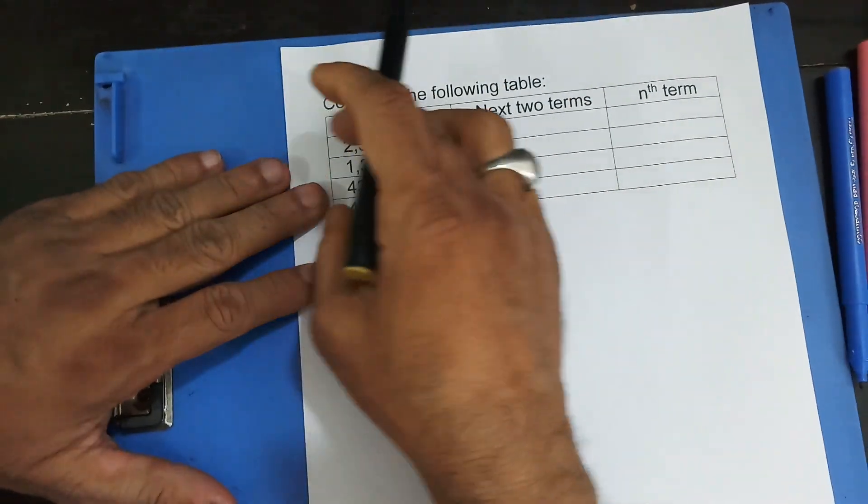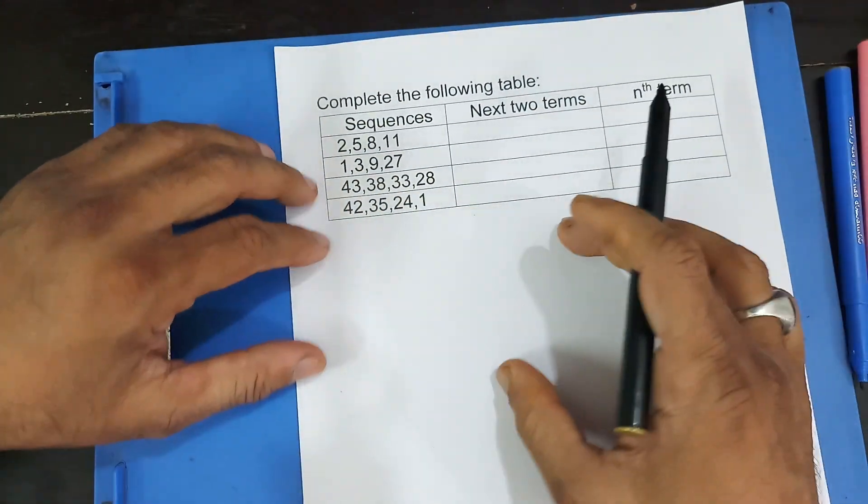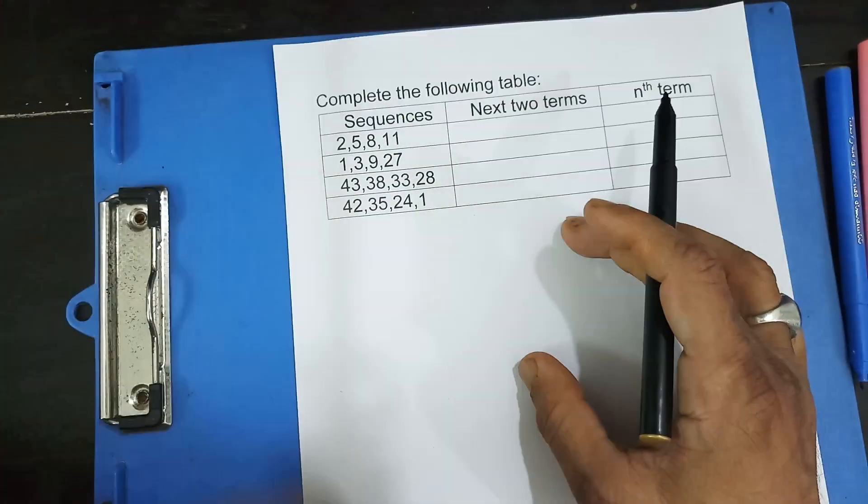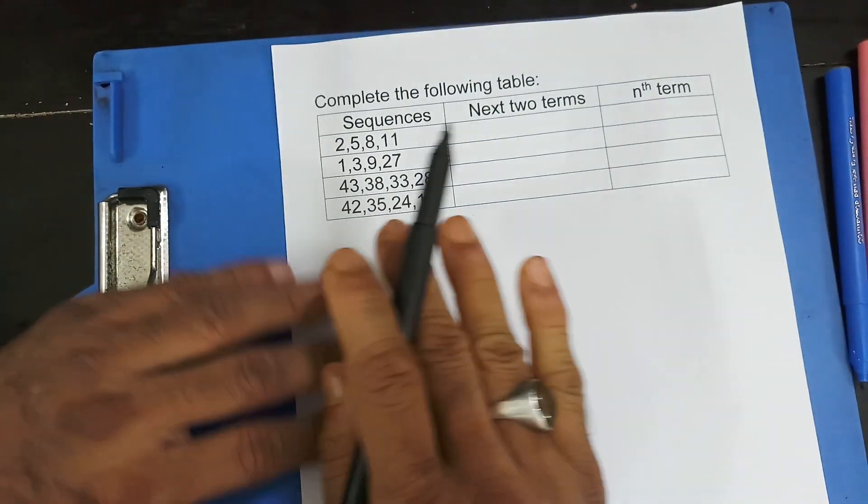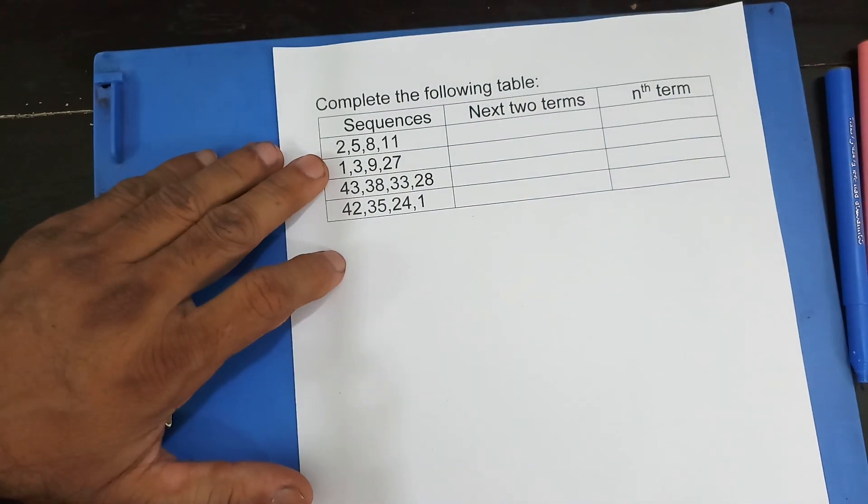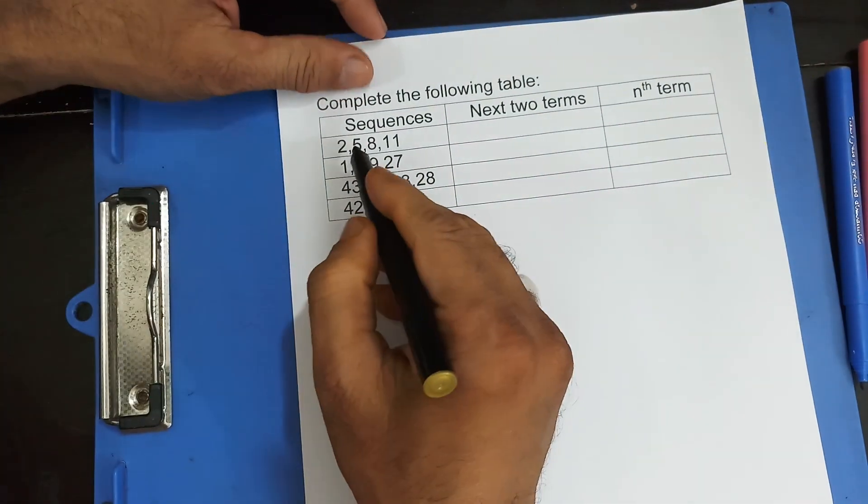Now, it says complete the following table. You may have a table or you may have some questions written A, B, C or 1, 2, 3, 4, or letters. How to do this thing? All right, let's go one by one.